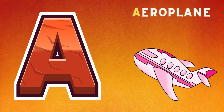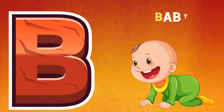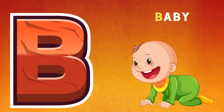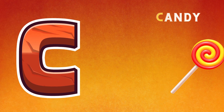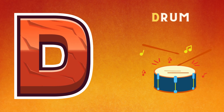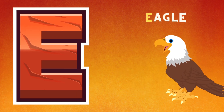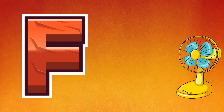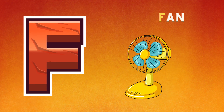A is for aeroplane. B is for baby. C is for candy. D is for drum. E is for eagle. F is for fan. G is for goat.